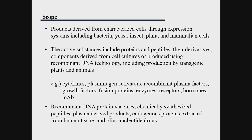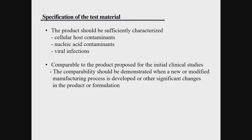The scope includes products derived from characterized cells through expression systems including bacteria, yeast, insect, plant, and mammalian cells. Proteins, peptides, and recombinant DNA technology-based products, as well as products from transgenic plants and animals, are included. Cytokines, plasminogen activators, recombinant plasma factors, growth factors, fusion proteins, enzymes, hormones, protein vaccines, plasma-derived products, endogenous proteins, and oligonucleotide drugs are all within this guideline's scope.